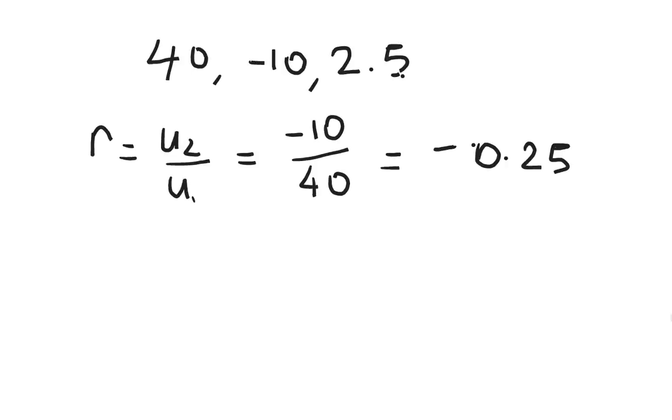So we have negative .25, that is our R in this particular case. Okay. So, if you need to figure out any term, the fifth term, the hundredth term, whatever term. You do something very similar to what you do to arithmetic sequences. You just plug it into this formula. UN equals U1 R to the N minus 1. We're not going to go over that. It's just pretty much plugging directly into a formula.